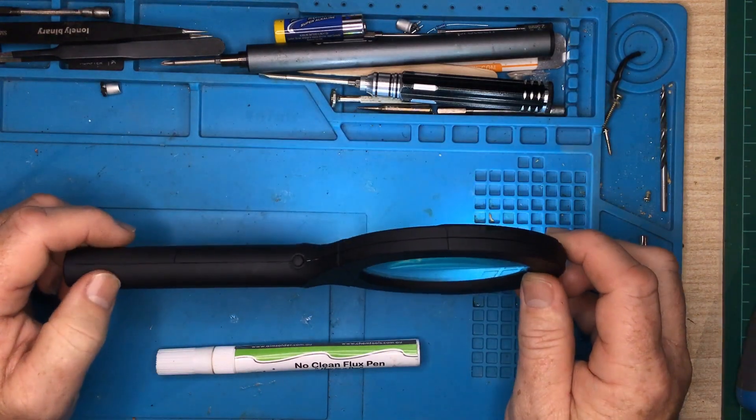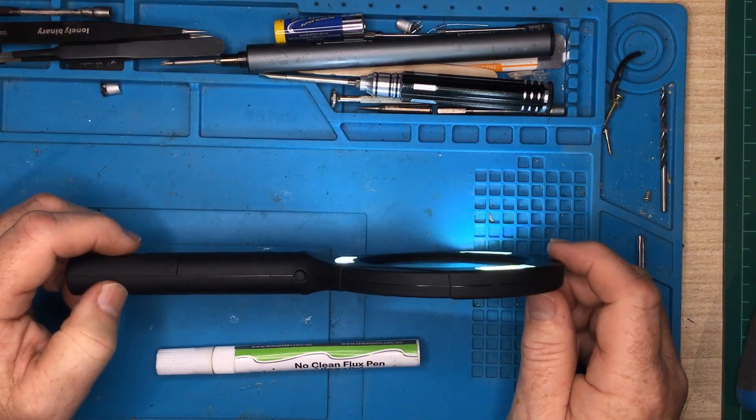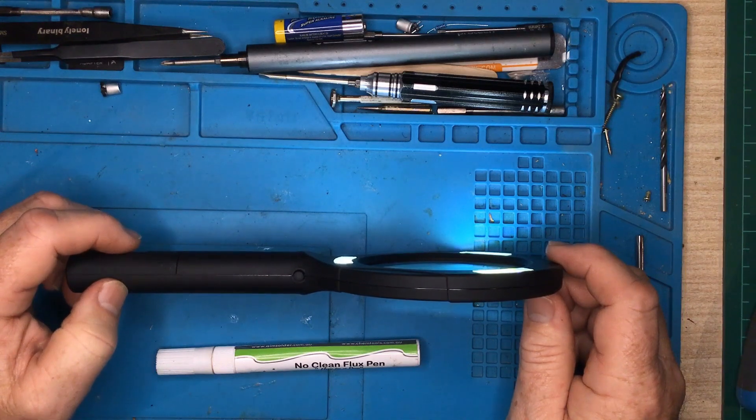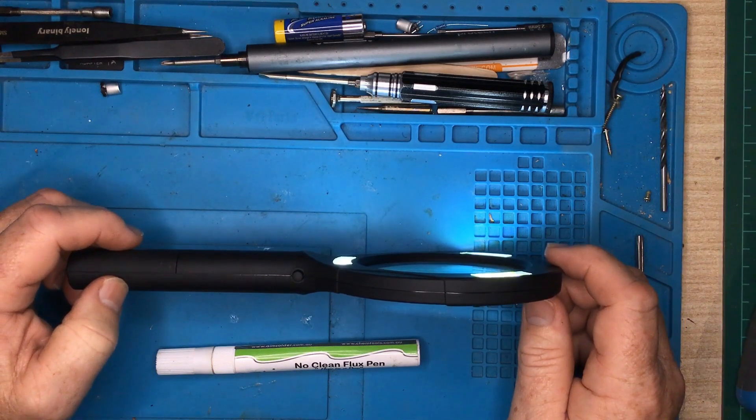Having a quick look at it, it looks to me, if you can see the gap there, it looks to me as though it's just clipped together. But that usually means that they're not designed to come apart very easily. But we'll give it a go.